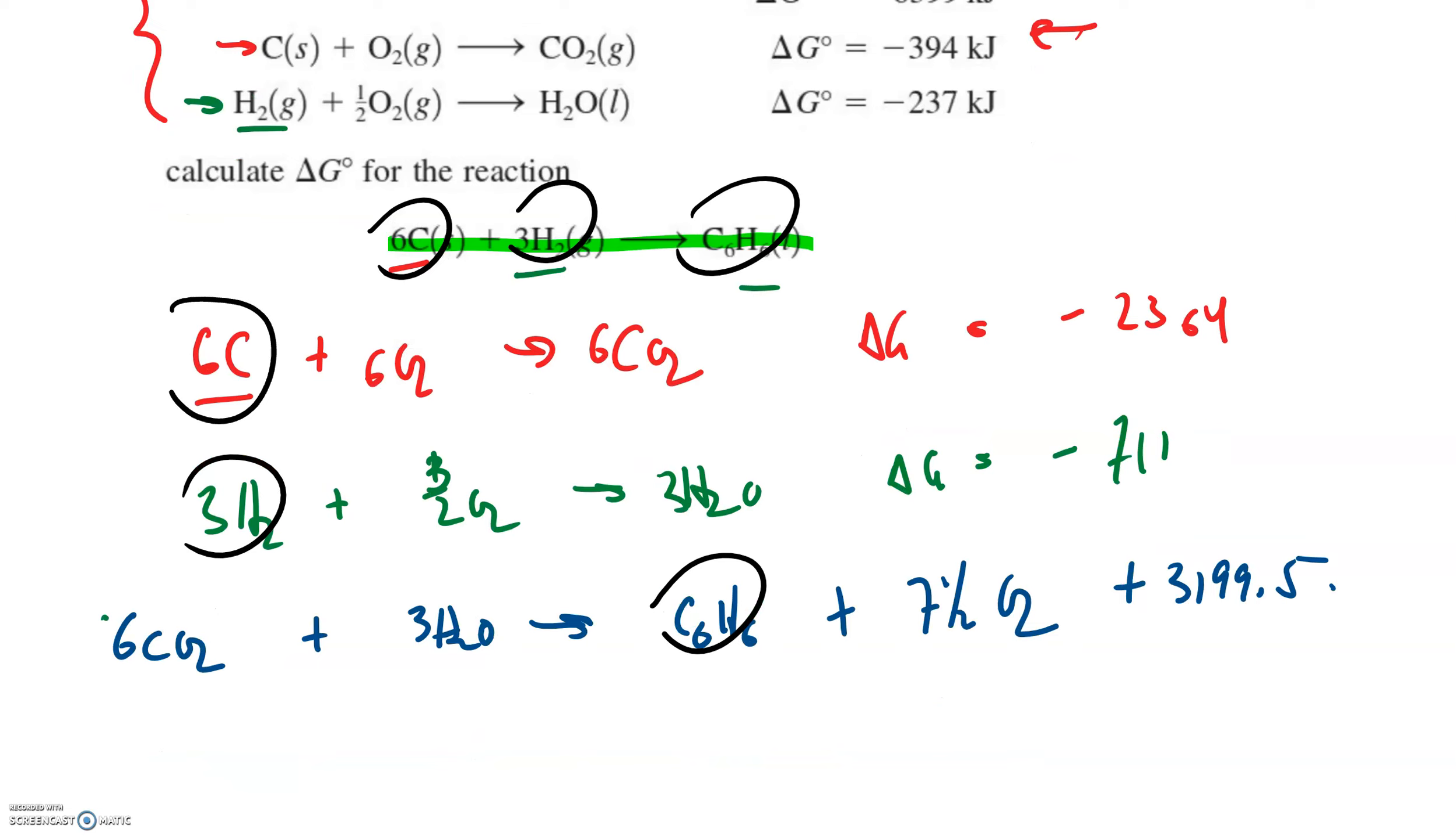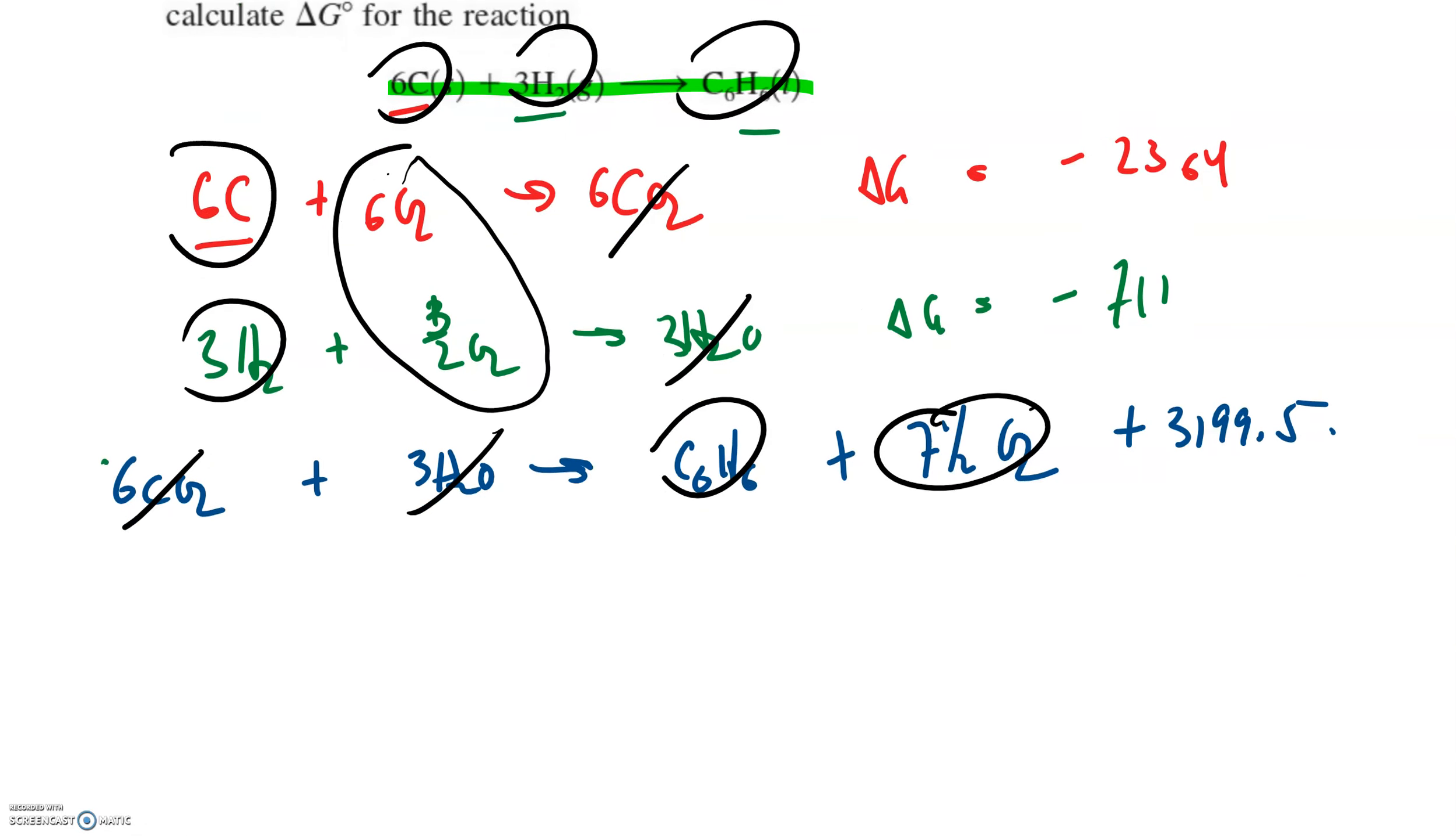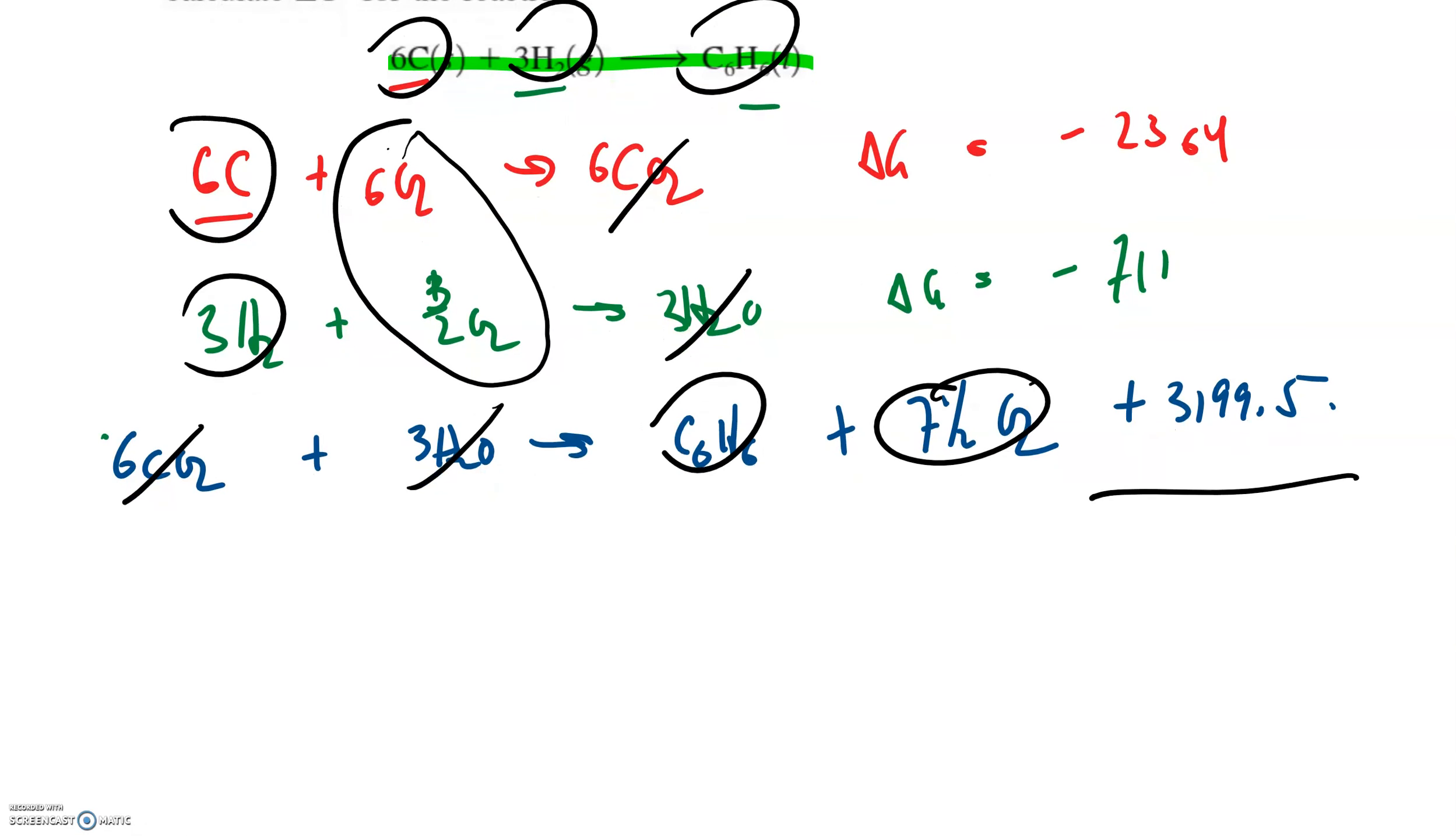We're making sure that everything lines up. 6 carbons, 6 carbons, 3 hydrogens, 3 hydrogens, 1 C6H6, 1 C6H6. Everything else should cancel. So carbons cancel obviously. Carbon dioxide, 3 H2O's, 3 H2O's. And here are 9 halves of oxygen. I must have divided that incorrectly but that's okay. We'll stick with it. So it looks like everything adds up and so what's the overall energy change here? Negative 2364 minus 711 plus 3199.5 and we get overall 124.5.